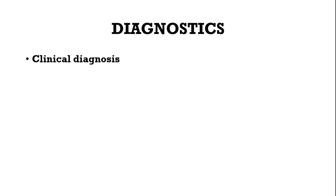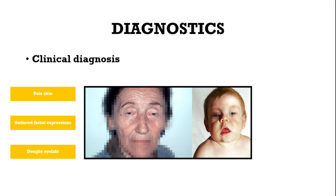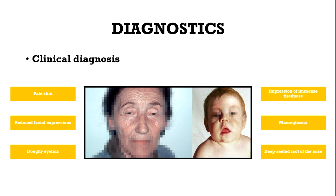How is Hashimoto thyroiditis diagnosed? It can be a clinical diagnosis if the hypothyroidism is overt with the following typical features: pale skin, reduced facial expressions, puffy eyelids, impression of immense tiredness, macroglossia, and a deep-seated root of the nose.